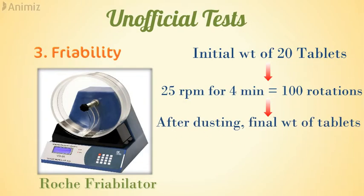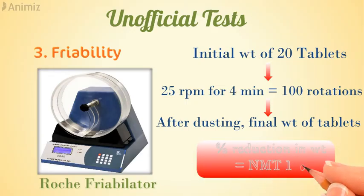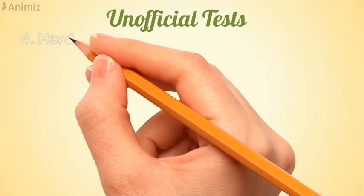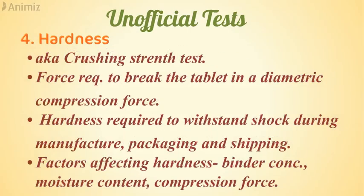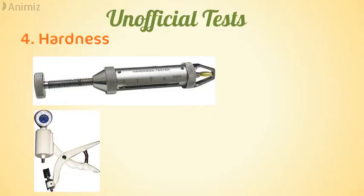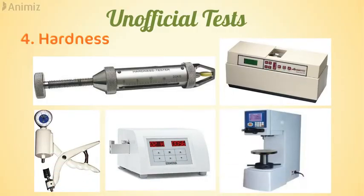After 4 minutes, the tablets are dusted and their final weight is measured. To pass, the percentage reduction in weight should not be more than 1 percent. The fourth test is hardness, also known as the crushing strength test — the force required to break a tablet under diametric compression. Factors affecting hardness include binder concentration, moisture content, and compression force. Different hardness testers include Monsanto, Pfizer, Erweka, Schleuniger, and Strong-Cobb.